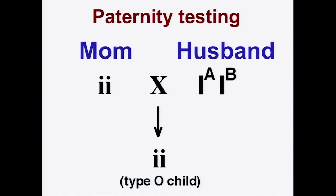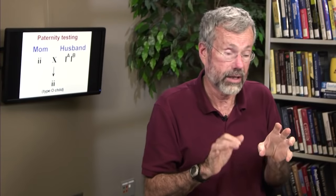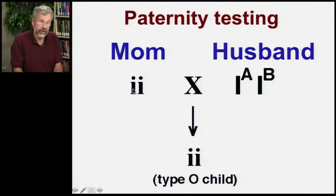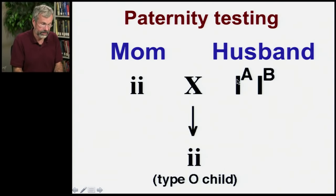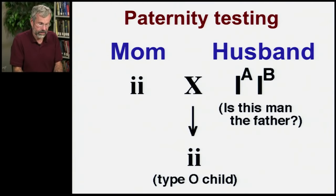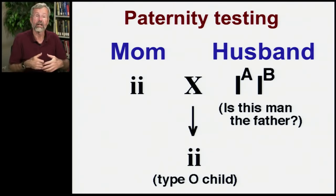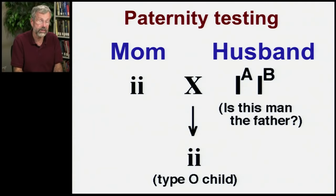When you have this kind of variability in a population, some of the earliest paternity tests were based on blood type. Say we have a couple and there's a child: the mother is type O, so she's homozygous recessive — little i. Her husband is type AB. And the child is also type O. So there's a question about whether he's really the father. There are many more alleles and genetic markers used for paternity testing today, and this was one of the very first ones in general use.